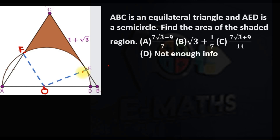The tangent line is always perpendicular to the radius, so this is 90 degrees. This is an equilateral triangle, so each angle is 60 degrees. Here is 90, here is 60, so this should be 30 degrees.